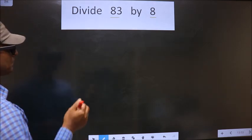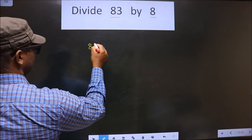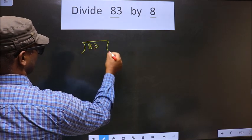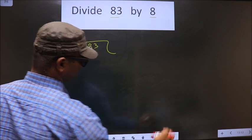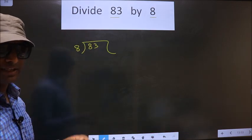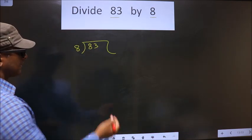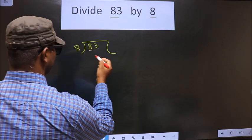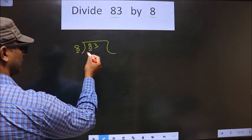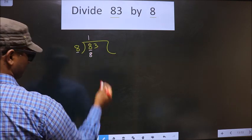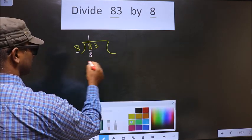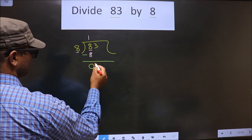That is 83 divided by 8. Okay. Next. Now here we have 8. Here also we have 8. When do we get 8 in the 8 table? 8 once is 8. So now we should subtract. So we get 0.